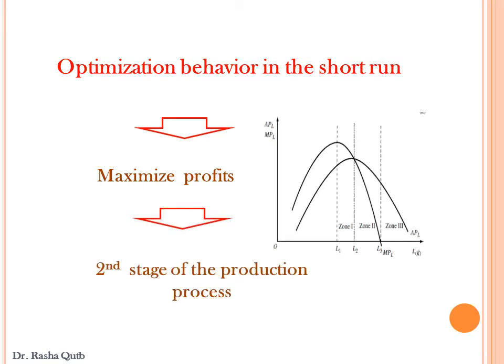Here in the second stage, it starts at the point when the average product of labor reaches its maximum, and the stage ends where the marginal product of labor becomes zero. In terms of labor use, this is identified as the range of labor use from L2 to L3.